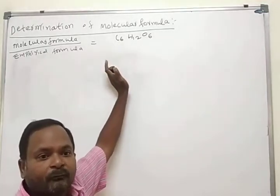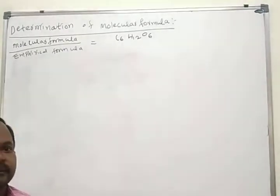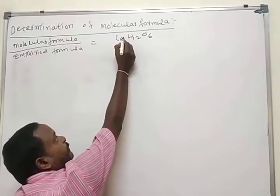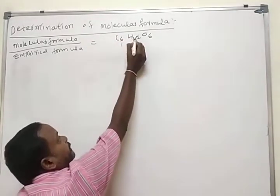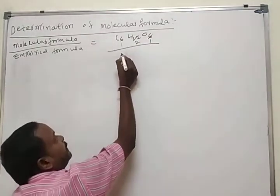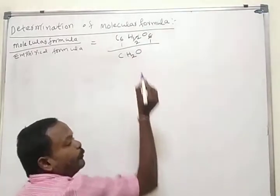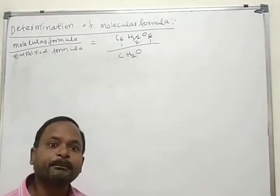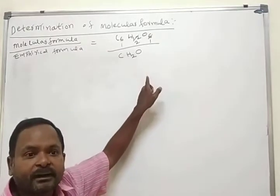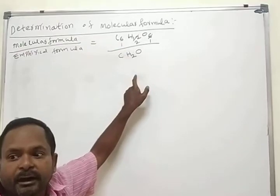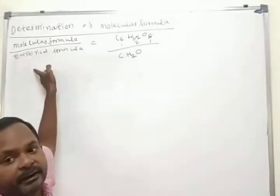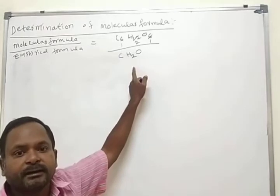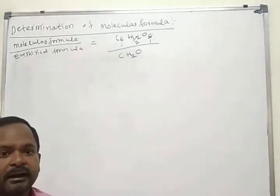Glucose means we should have six carbon atoms — that is the exact number. The exact number of atoms of a molecule present in a compound we call as molecular formula. Now, what is the empirical formula? You take the simplest number — the simplest form of the molecular formula is called the empirical formula.